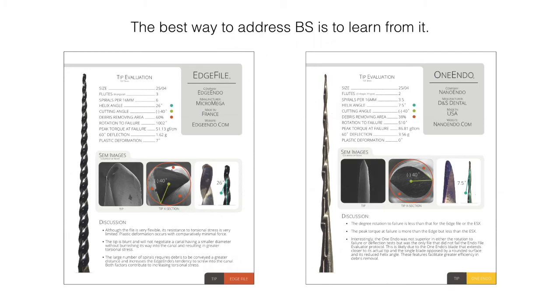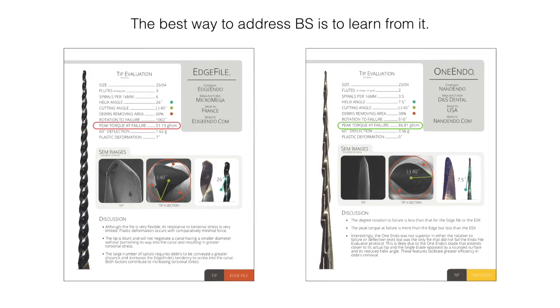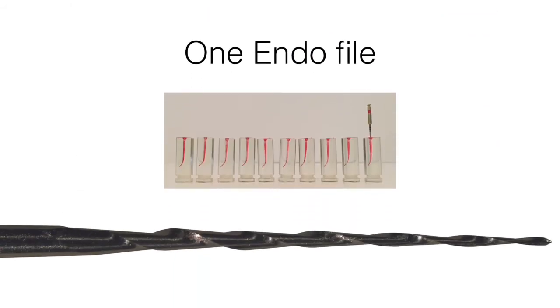We've found that clinical performance cannot be predicted by the sum of just one, two, or even three of a file's component characteristics. The variables are simply too great. Instead, total performance is our final consideration. And considering the One Endo performed more than 10 times better than the Edge file, maybe we should reconsider that half-the-cost BS too.